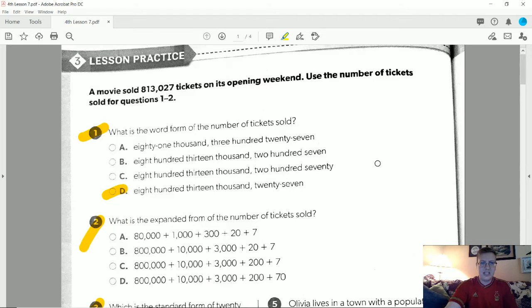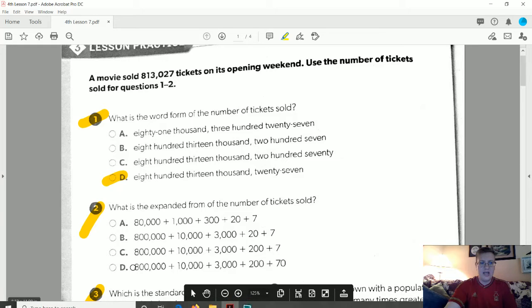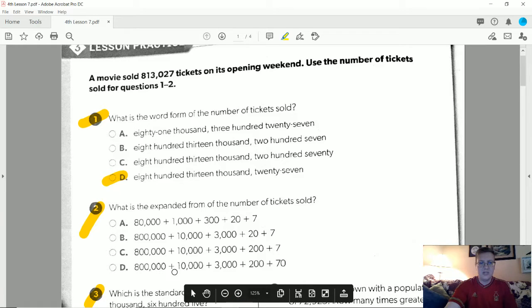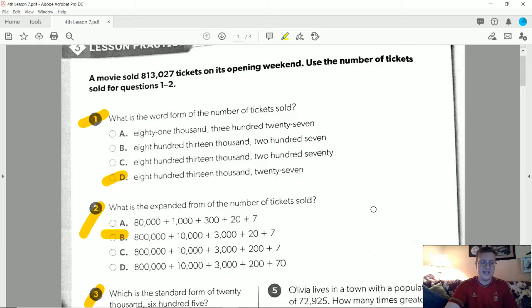Number two, the expanded form. We want to write the value of each digit by place value, so 800,000 plus 10,000 plus 3,000 plus 20 plus 7. Following along, our correct answer is going to be letter B, so 800,000 plus 10,000 plus 3,000 plus 20 plus 7.